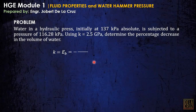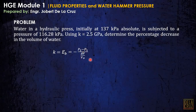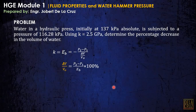Using the formula EB equals P2 minus P1 over the volumetric strain, we are looking for this whole term — the volumetric strain. The problem asks for percentage, so we express it as a percentage. Cross multiplying: change in volume over original volume equals the change in pressure over EB, times 100%.